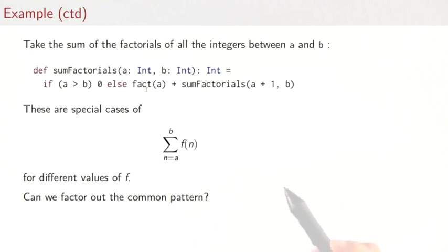Where f is a given function and n is taken from the interval between a and b. The question is, if mathematics has a special notation for that, shouldn't programming have one as well? Can we factor out the common pattern into a single method?